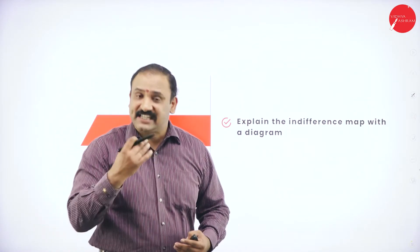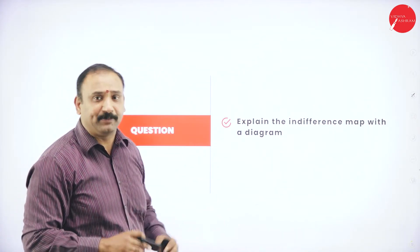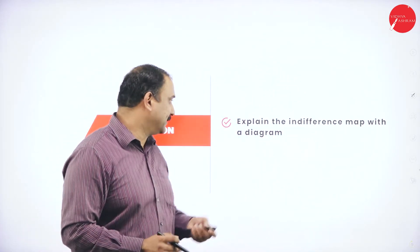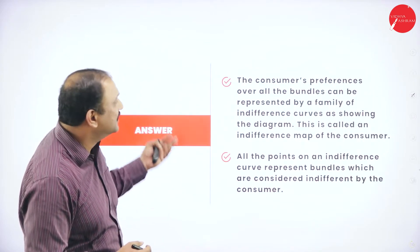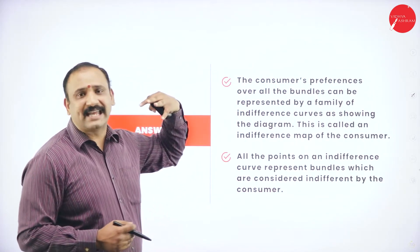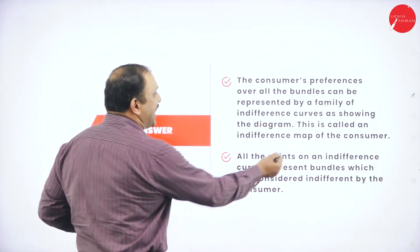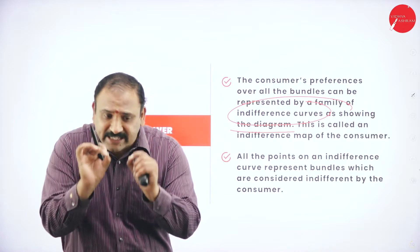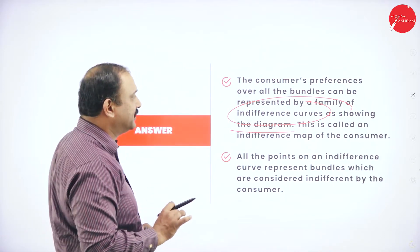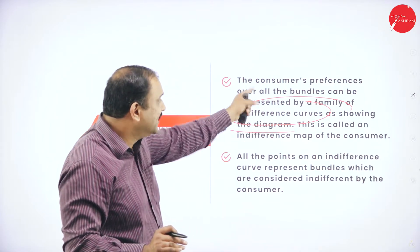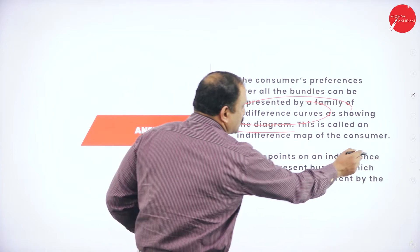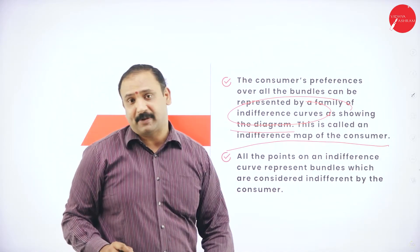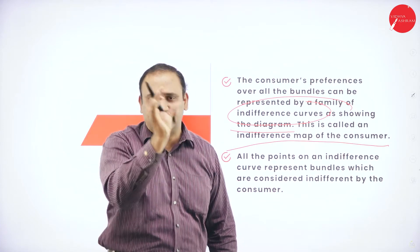We now move to the next important topic: the indifference curve map. The consumer's preference over all bundles can be represented by a family of indifference curves — this is a very important term. It is not a single curve but a collection, which is why we call it a family. This is also called the indifference map of the consumer — it is a mapping, a set of points and collection. All the points on an indifference curve represent bundles which are considered to be indifferent by the consumer.